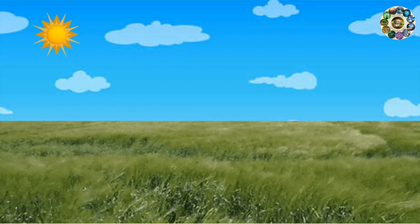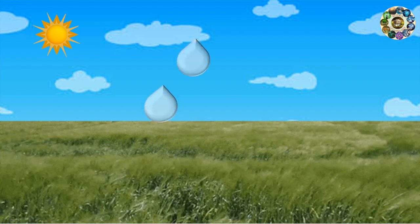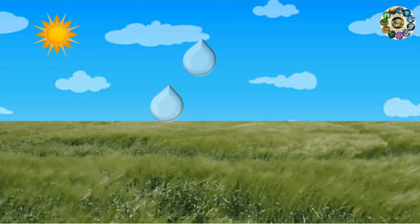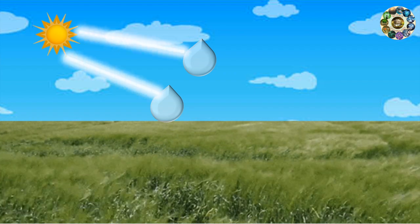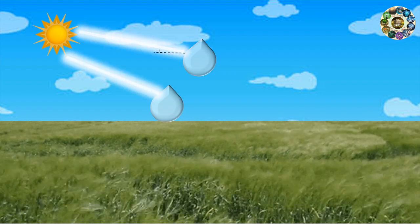To form a rainbow, it requires water droplets to be floating in the air. That's why we see them right after it rains. When the white light from sun hits the water droplets at certain angle, then it causes rainbow.